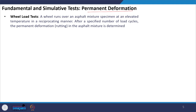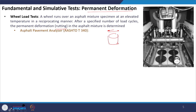We are talking about permanent deformation or rutting. In this presentation we will talk about permanent deformation and then fatigue cracking. One of the very popular tests is the wheel load test, where a wheel runs on a prepared sample of asphalt mixture at an appropriate temperature — this can be the maximum pavement temperature of that particular location, or a fixed temperature as specified by the agency. The wheel continues to move on the specimen, and after a specified number of load cycles the rut depth is measured. One common type is the asphalt pavement analyzer (APA).